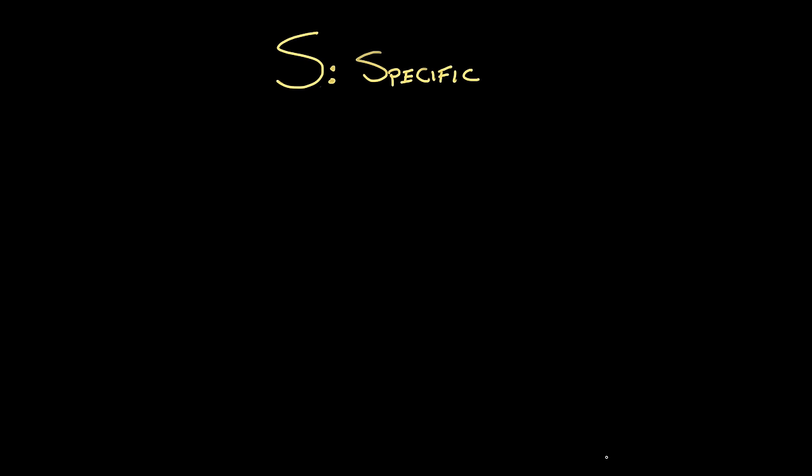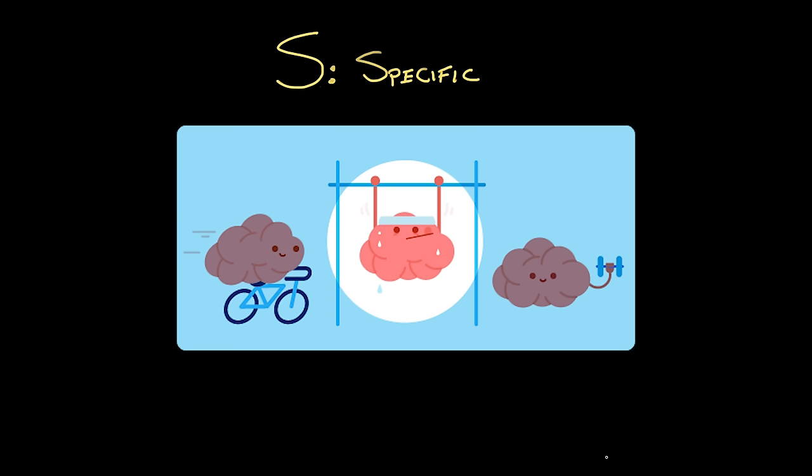S is for specific. TP wants to work on pull-ups, and they're not interested in biking or weight training. There's one skill that Thinky Pinky wants to work on, and that's pull-ups.